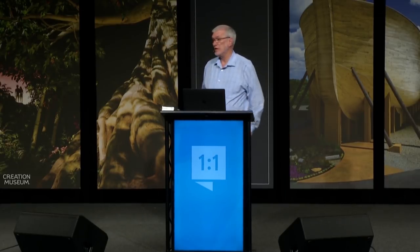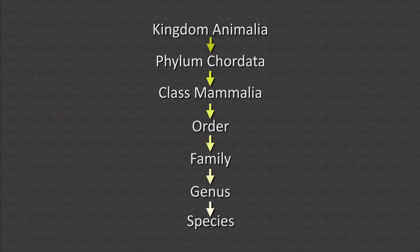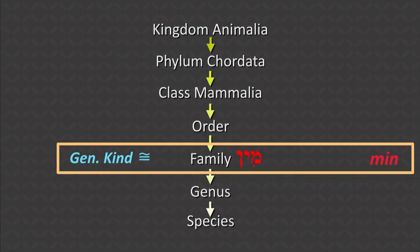We have a classification system today — it's an arbitrary system man has invented: Kingdom, Phylum, Class, Order, Family, Genus, Species. What we would say is that the Hebrew word 'min,' translated 'kind,' really corresponds in our modern classification system to more at the family level of classification — not genus, not species. In most instances, it's at the family level. Let me explain how we came up with that.